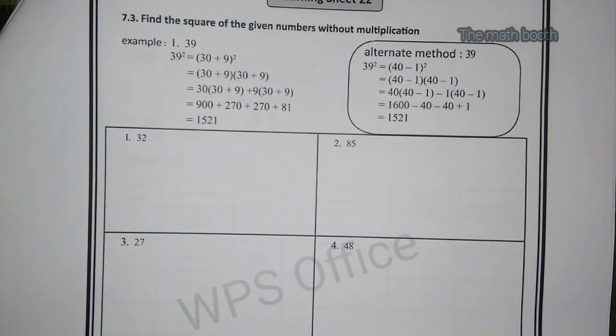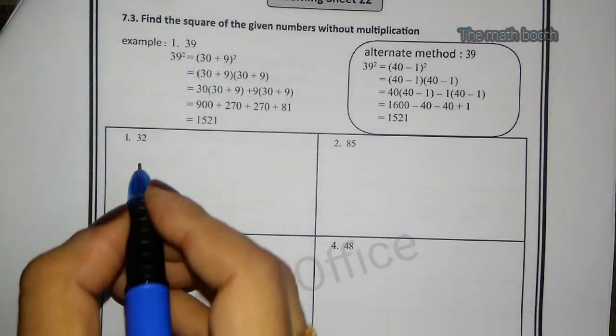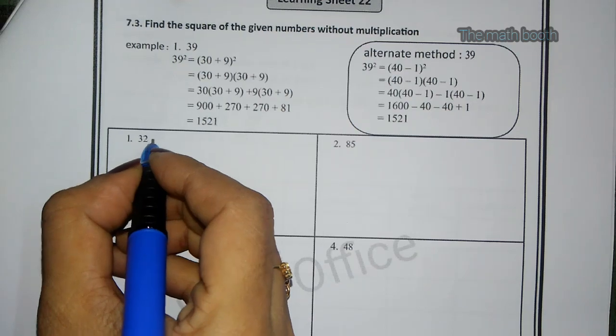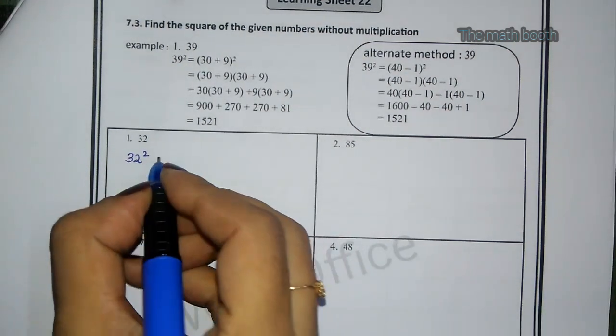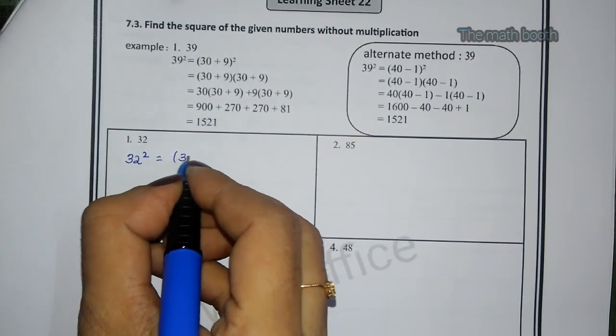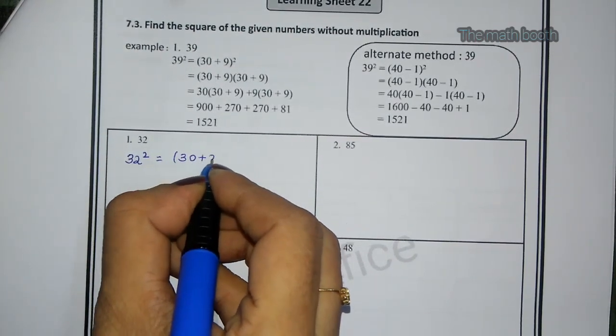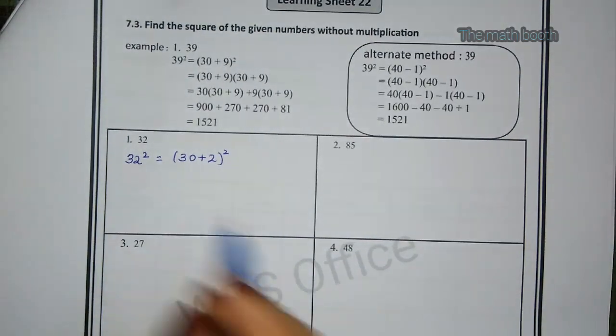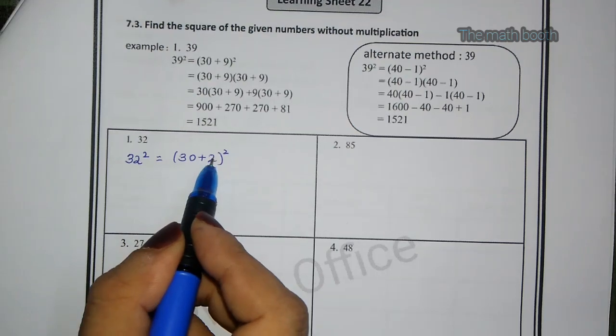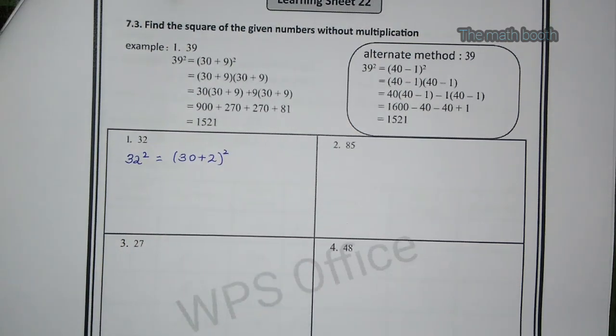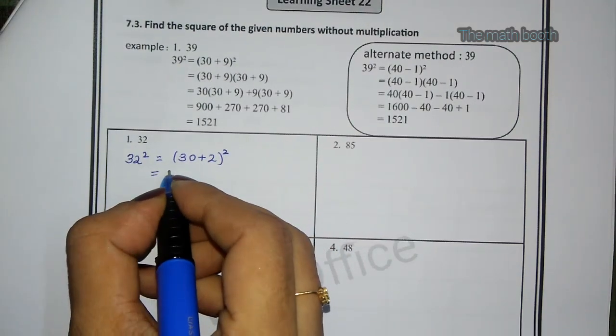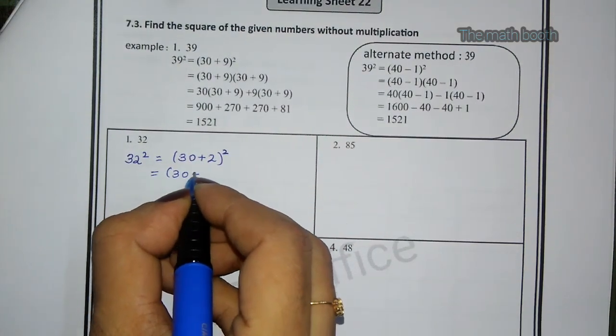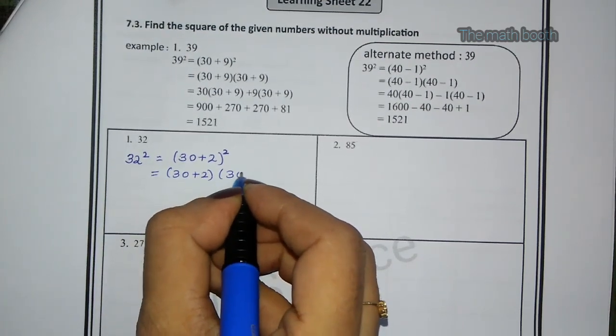Let us see first question, 32. First what we have to do is 32. How we will solve this? 32 we have to find the square. 32 square. So how we will write? (30 + 2), (30 + 2) square. This 32 what I have done? 30 plus 2 square as it is. Now 2 times we will write this because square means double of the same number. (30 + 2) into (30 + 2).